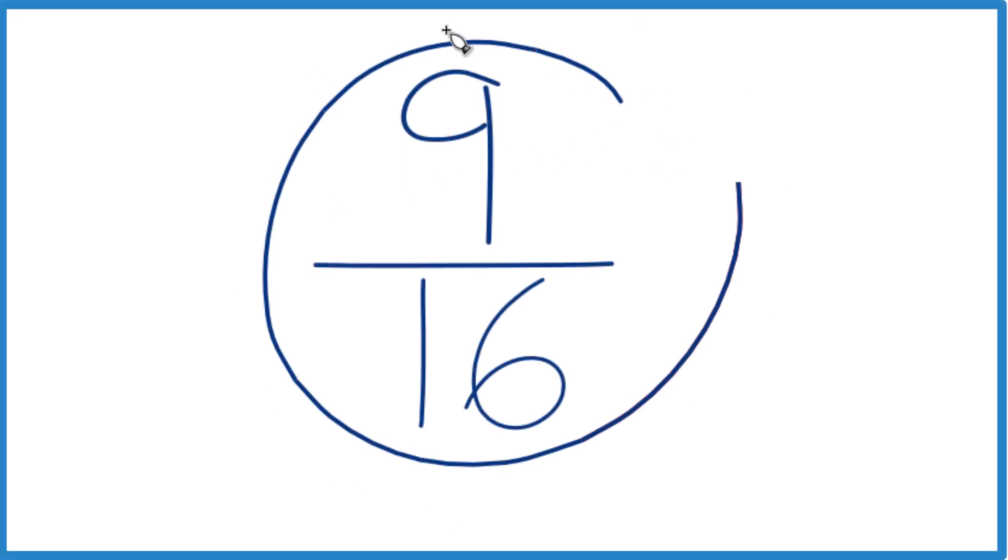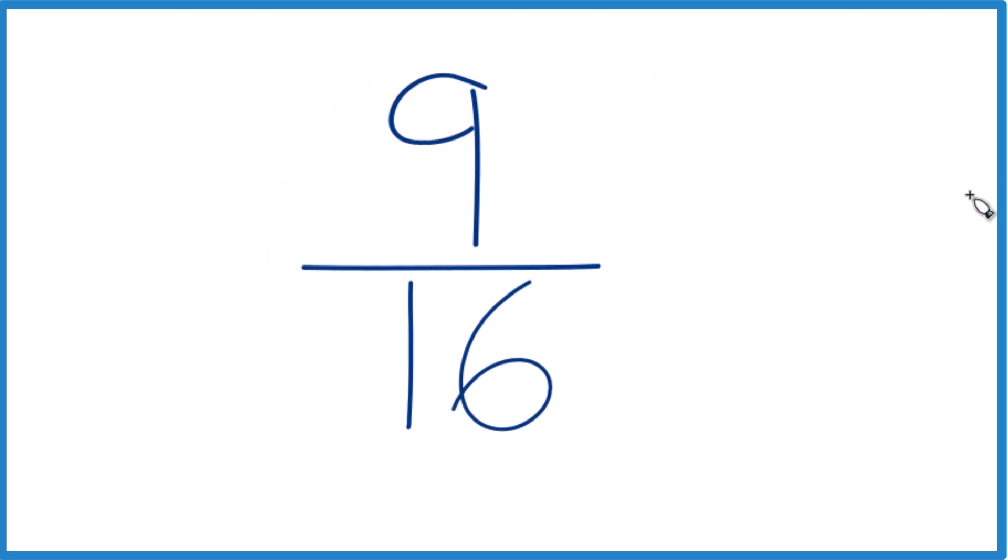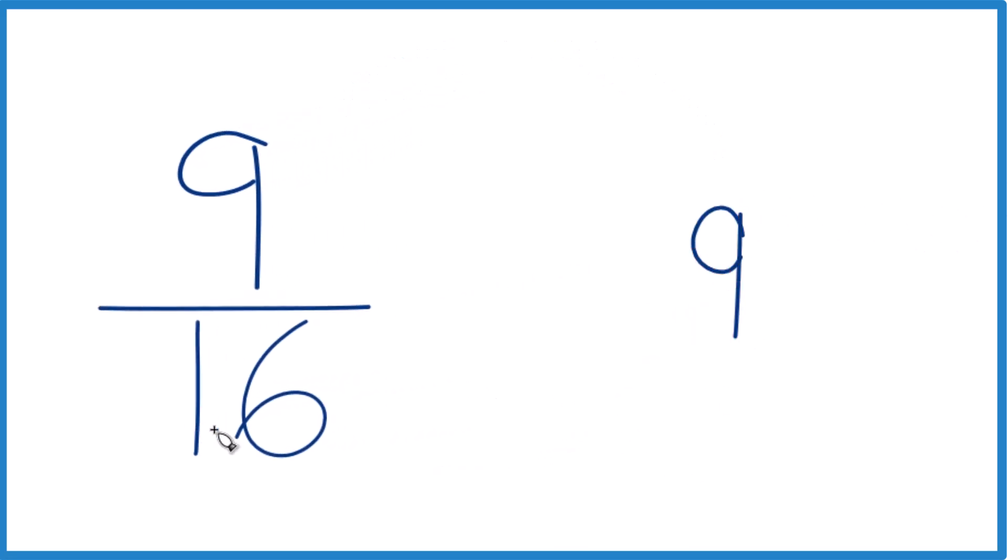So let's write the fraction 9/16 as a decimal. Basically what we're saying is we have 9, and we want to know how many times 16 goes into 9. So 16 doesn't go into 9, but we could call it 90 if we put a 0 here and put a decimal point.